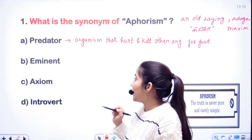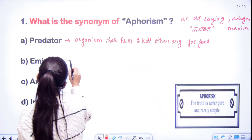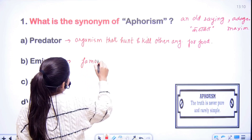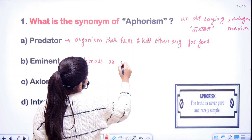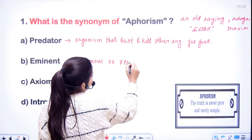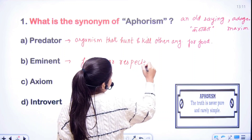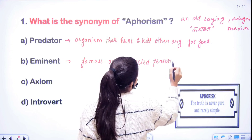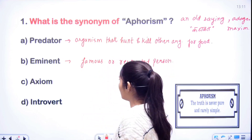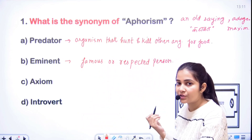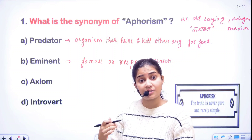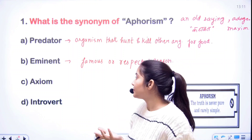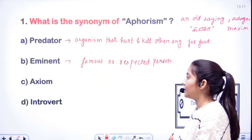Next word is 'eminent'. Eminent क्या होता है? Famous and respected person — यानी कि well-known, famous और respected person. कोई भी जो बहुत famous हो और respected हो. जैसे कि Amitabh Bachchan ji — वो बहुत famous और respected person हैं Bollywood में. So यह word हो गया eminent हमारा.